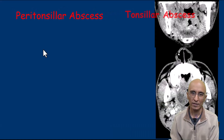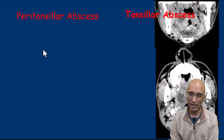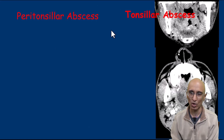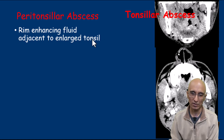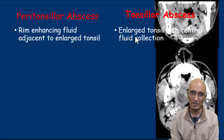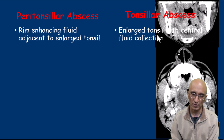It is important to differentiate peritonsillar abscess from tonsillar abscess. Peritonsillar abscess is much more common than tonsillar abscess. In peritonsillar abscess there is a rim enhancing fluid collection adjacent to an enlarged tonsil, classically along the superior aspect, whereas in tonsillar abscess there is a central fluid collection within an enlarged tonsil.